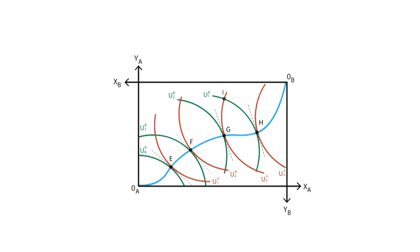The Edgeworth box is widely used in welfare economics, game theory, or general equilibrium theory, to name a few. It's worth mentioning that from the Edgeworth box we can easily derive the utility possibility frontier and the production possibility frontier.